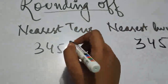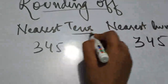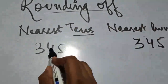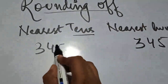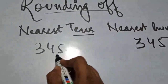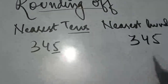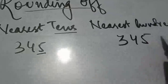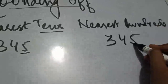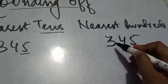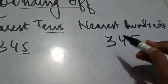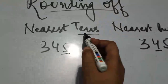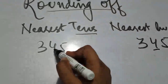Take the example of 345, and we need to round it to the nearest tens. Identify the tens place.